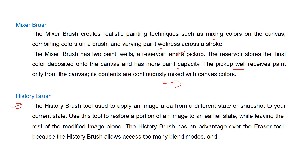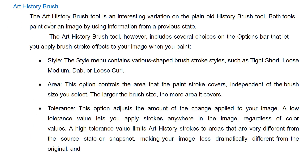The history brush tool gets its name from previous versions. It is used to apply an image area from a different state or snapshot to your current state, restoring a portion of an image to an earlier state while leaving the rest of the modified image as is. The art history brush is an interesting variation on the plain old history brush — both paint over an image using information from a previous state. The art history brush also includes options for style, area, and tolerance.